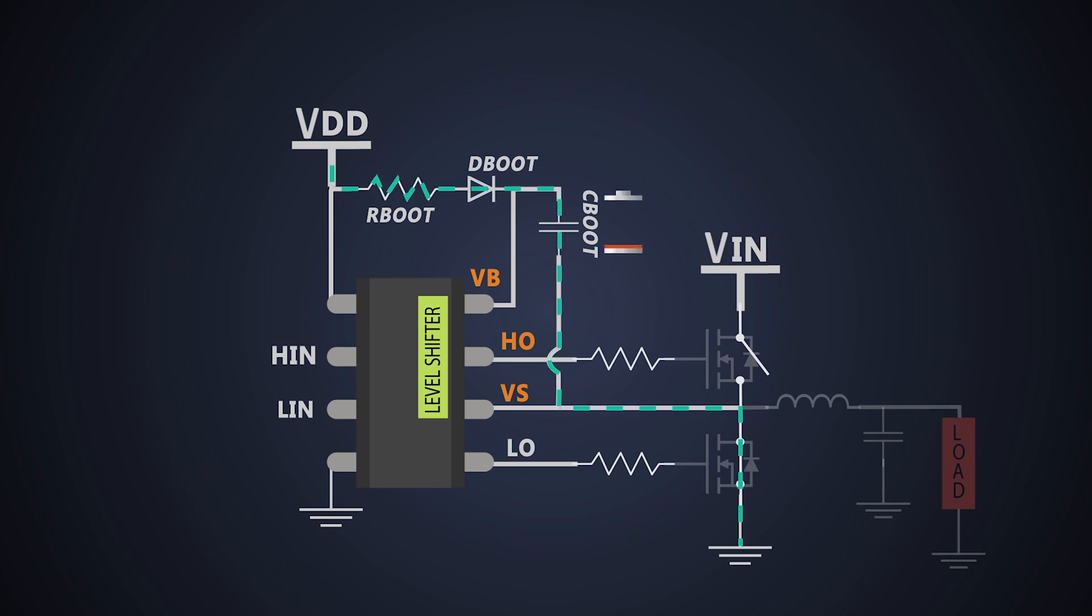The bootstrap capacitor charges from the bootstrap resistor and bootstrap diode from VDD power supply until the voltage across capacitor goes nearly equal to VDD. This capacitor doesn't take much time to charge itself.